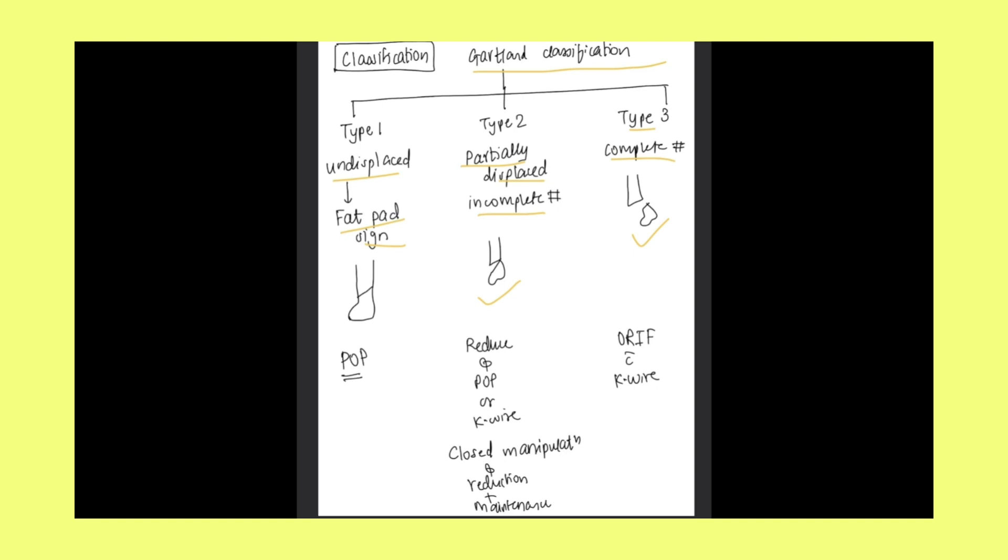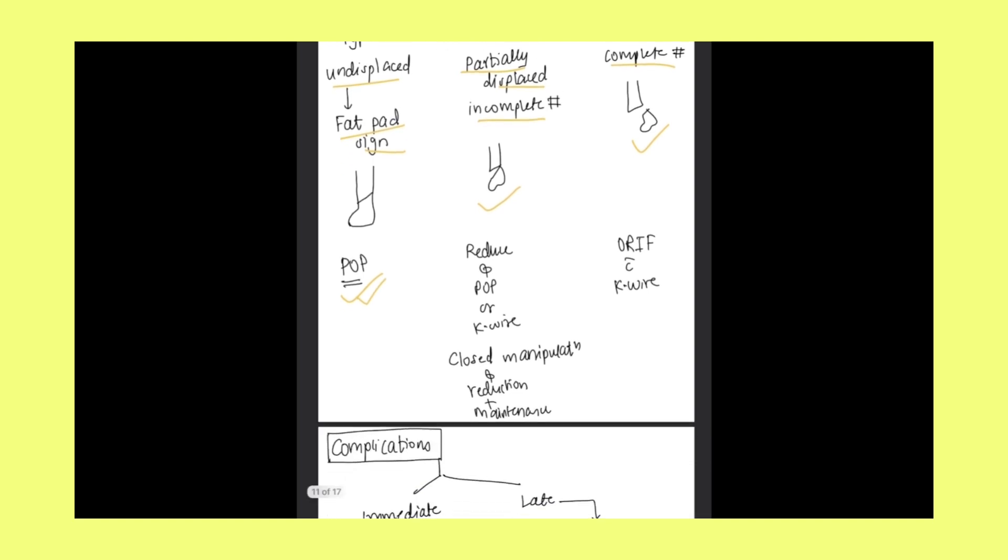How will we manage? Management is based on the type of Gartland classification of supracondylar fracture of humerus. Type 1 will be managed with the help of plaster of paris. Type 2 will be managed by reduction plus POP, that is plaster of paris, or K-wire, that is Kirschner's wire. Closed manipulation and reduction plus maintenance of reduction. Type 3 will be managed by open reduction, internal fixation with K-wire because complete fracture is there.